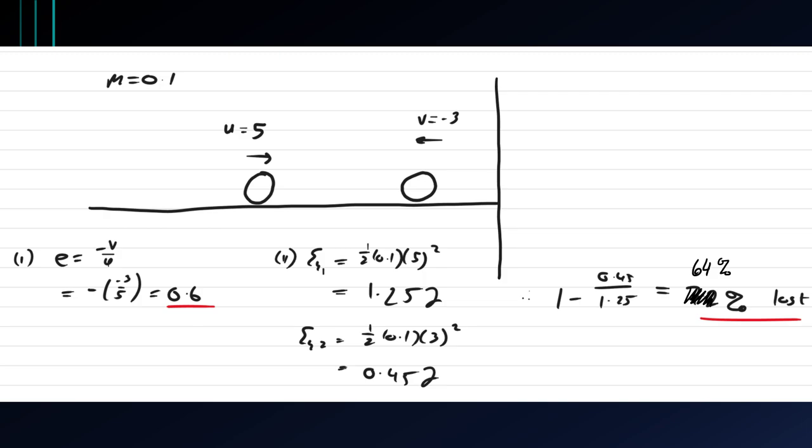So here's the solution. The ball has a mass of 0.1 kilograms, converting grams to kilograms.